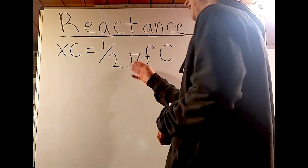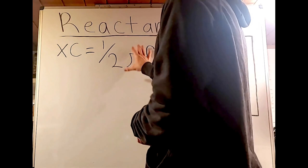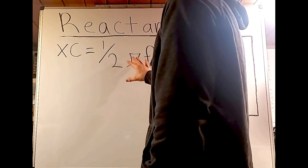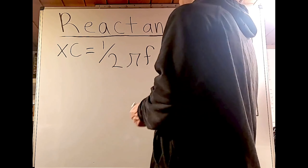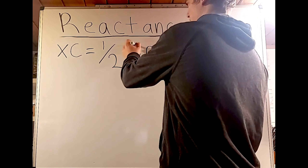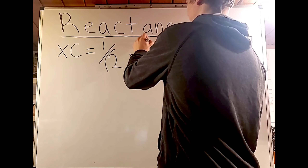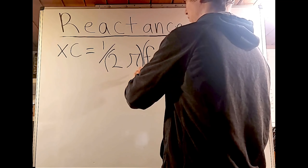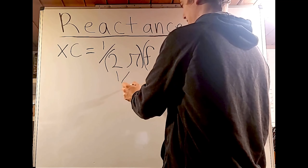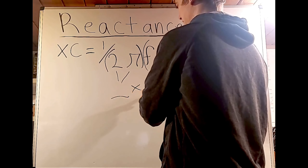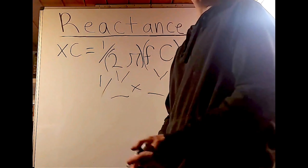Pi is 3.14, and everything in the denominator is multiplied. You can multiply the whole denominator together, or separate it into two chunks — first 2π, then frequency × capacitance — then multiply everything and take one over the total product.